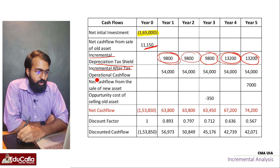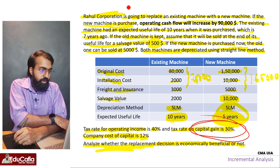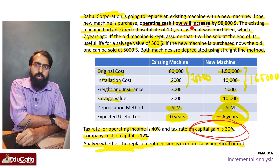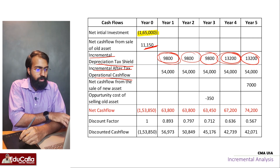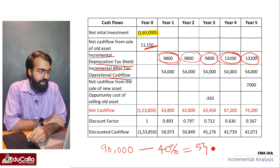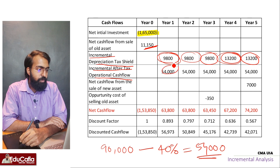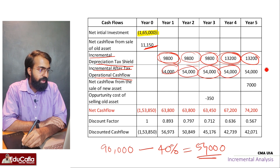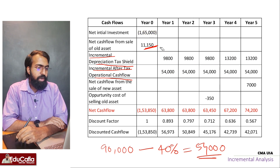Incremental after-tax operational cash flow. Extract operational cash flow. Operating cash flow will increase - that's the question. Extra $90,000 - actually that's not after-tax, that's before-tax. So $90,000 is before-tax. That's the 40% tax rate. After applying tax, you get the after-tax incremental operational cash flow. You can see what happens to the extra operational cash flow.